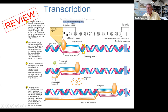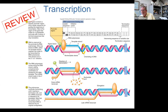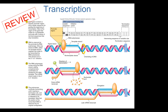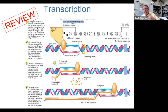RNA polymerase associates with the blue template strand of the DNA; there's also a non-template strand colored pink. The template strand is used as a mold to help create messenger RNA — just as the name implies, the non-template strand is not being used as a mold. The messenger RNA being transcribed is shown in yellow in the middle of the diagram.